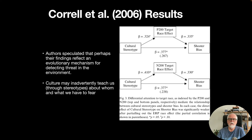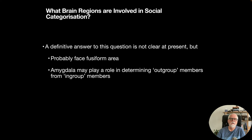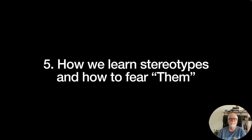Once these responses are learned, they happen very quickly — race of the target and cultural stereotype come together rapidly and facilitate potentially shooting someone who may or may not have a weapon. The suggested implication is that working on the stereotypes themselves may be the best intervention, so that when race becomes activated it doesn't trigger this kind of shooter bias. The brain regions involved in social categorization include the fusiform face area and the amygdala, which appears to play a role in distinguishing out-group from in-group members.